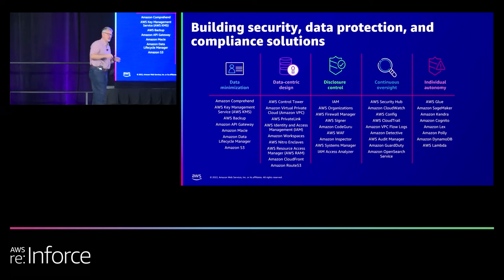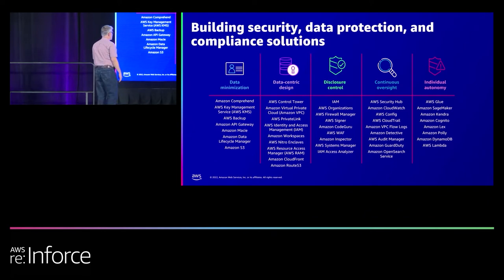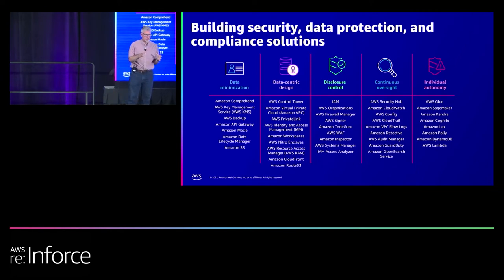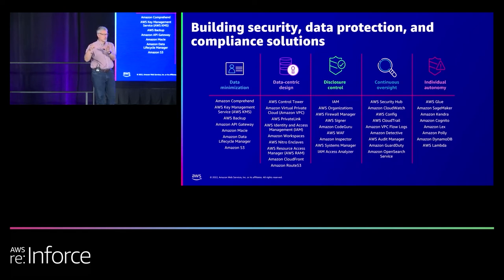For data-centric design, if you're not using PrivateLink and VPC endpoints right now, you should be — almost any AWS service supports them. That provides a secure tunnel at layer five. Control Tower is the best way to automate compliance within the privacy space. It has guardrails that are considered mandatory or recommended, dealing with things like cross-border data transfers and limiting who can spin up a service in a given region.